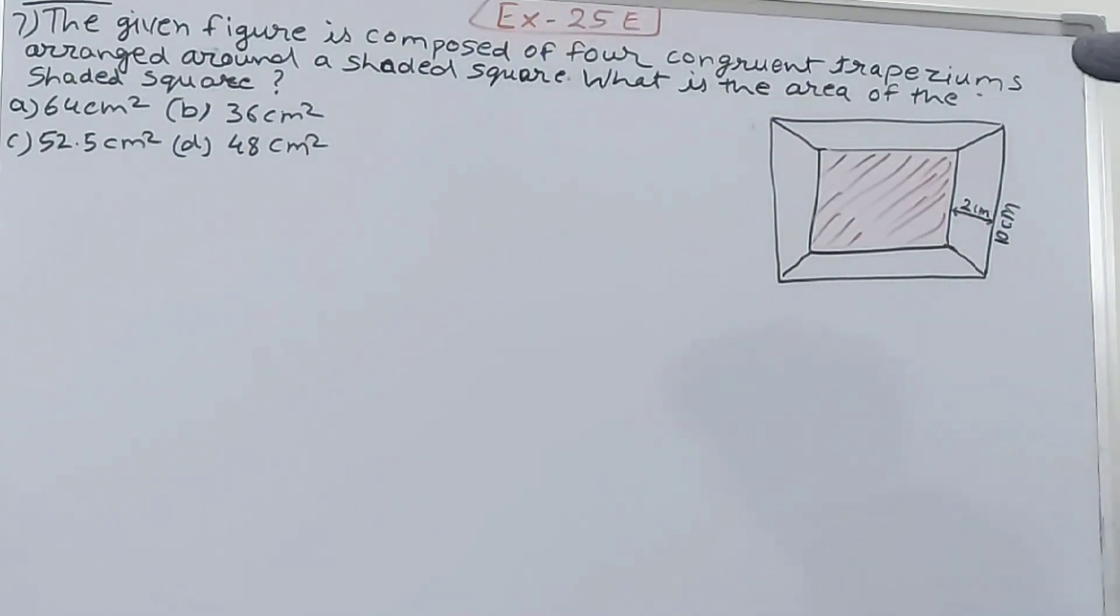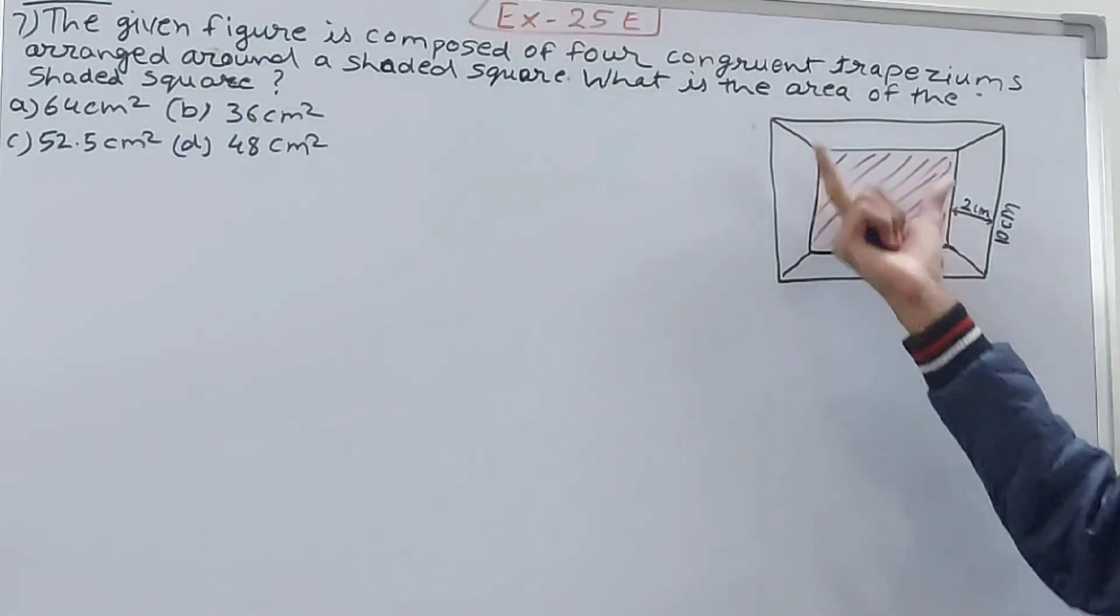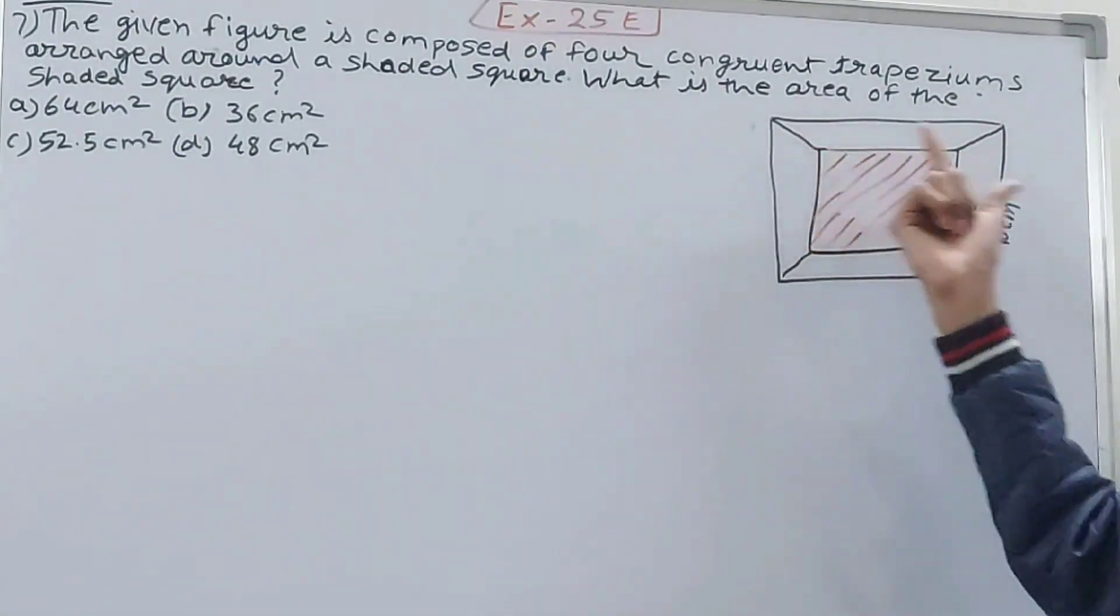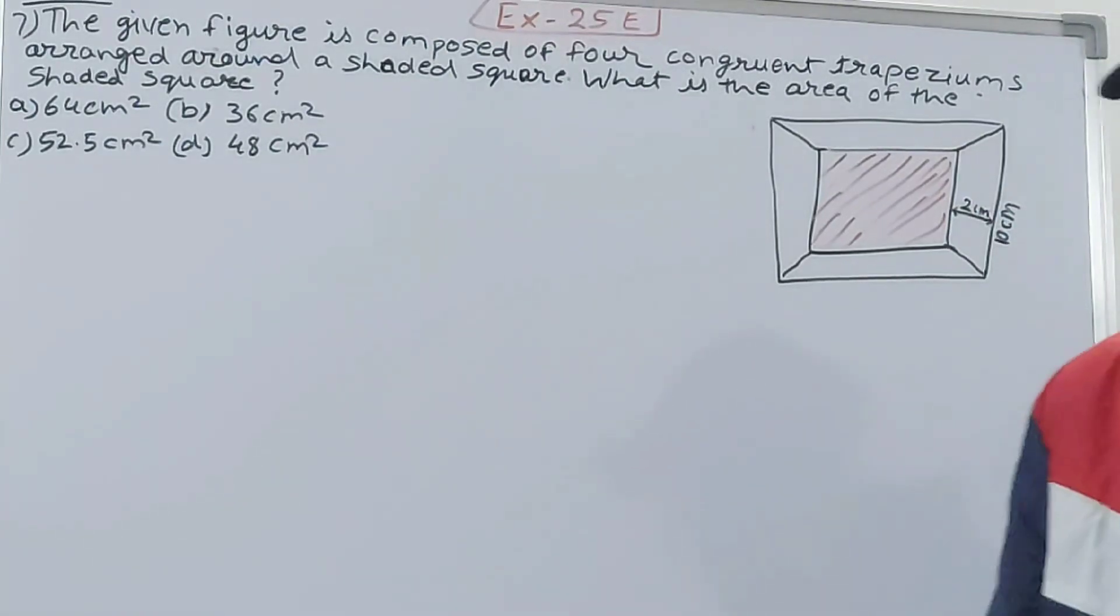The given figure is composed of four congruent trapeziums arranged around a shaded square. What is the area of the shaded square? You can see we have a square and outside of it it is covered with four equal congruent trapeziums.